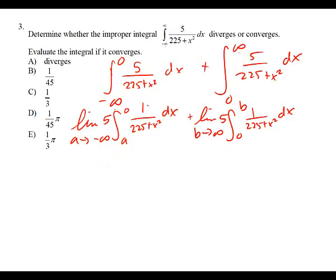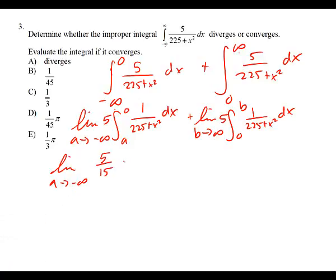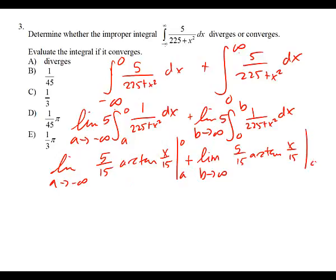Both integrals integrate the same way. Is it arc tangent, arc sine, or arc secant? Arc tangent. So we have the limit as A approaches negative infinity, keeping the five. The A value is 15 — the square root of 225. We get five over 15 times arc tangent of X over 15, from A to zero, plus the limit as B approaches infinity of five over 15 times arc tangent of X over 15, from zero to B.